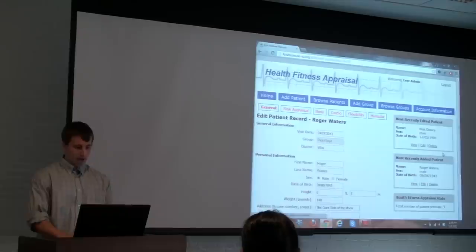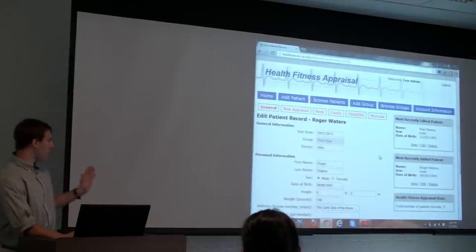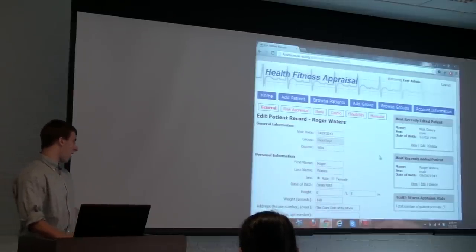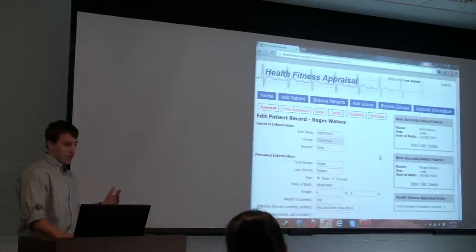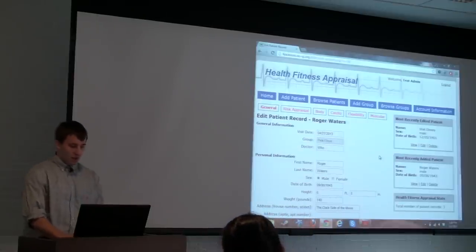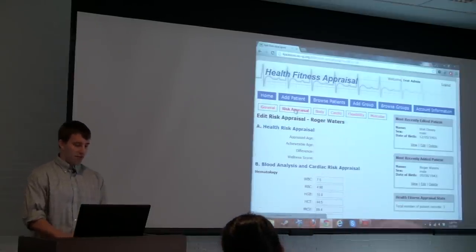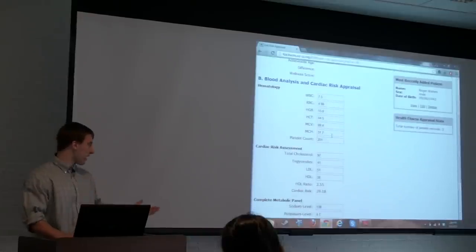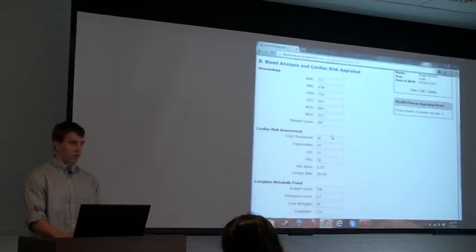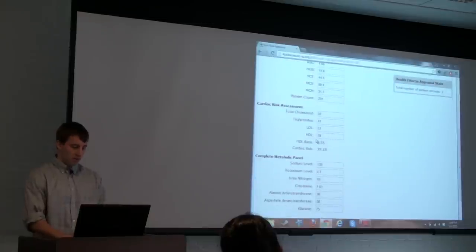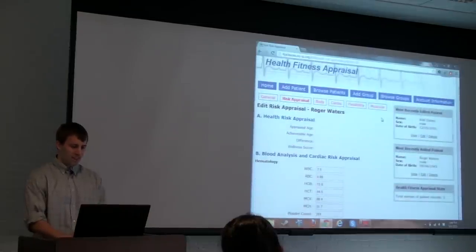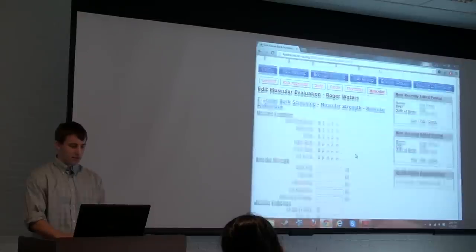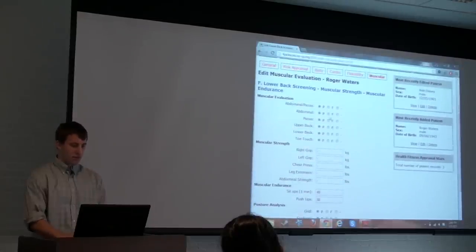So we'll edit him. On the general edit page we see some demographic information such as date of birth and address. I've also filled in the risk appraisal information just as some test data so that on the final report we can see more data. Some of the fields are calculated from some of the other parameters that have been input into the program. I've also filled out the muscular evaluation page just for more information at the end.